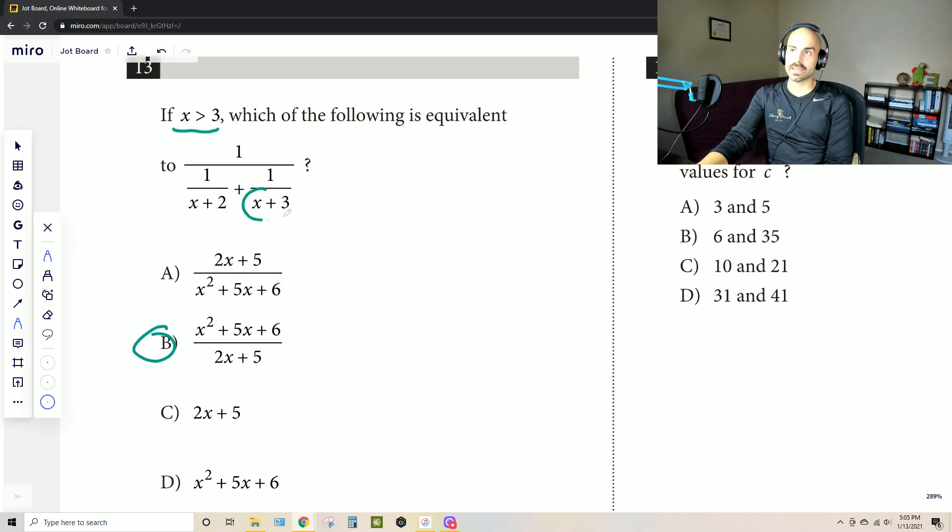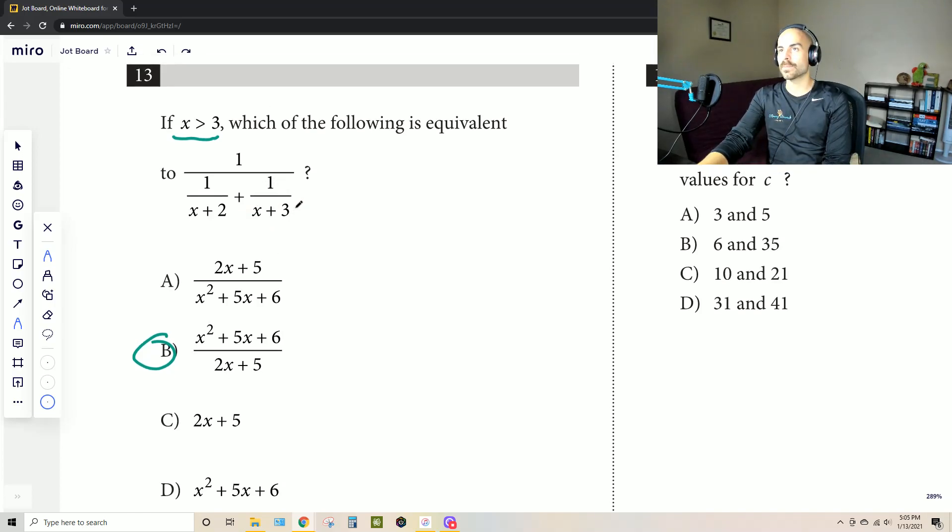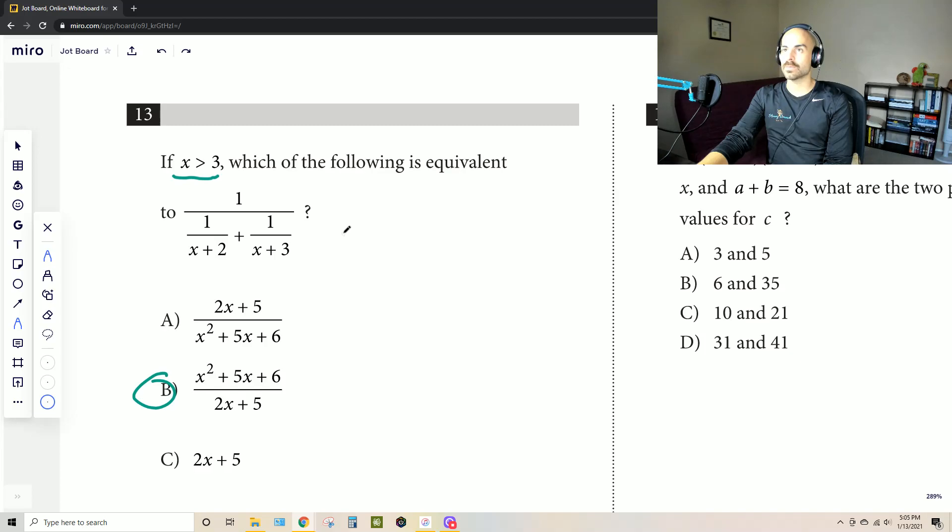And the reason they say that is they don't want you to make that 0, right, and then just making this whole equation not obtainable because you can't have a denominator of 0. But that means that we can plug in our own value for x as long as it's greater than 3. And the easiest number to think of is 4 because this is even and this is odd. So then we just have 1 over, and let's just say x equals 4.